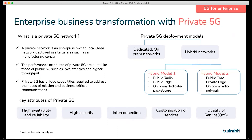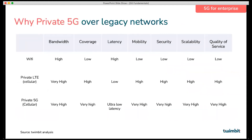5G private networks are flexible in terms of deployment, with two broad models. The first is a dedicated on-premises private network, which is independent of any interference from the public network. In the hybrid deployment model, an enterprise uses some components of the public network as well. Private 5G, when compared with legacy networks, offers better performance and security levels.